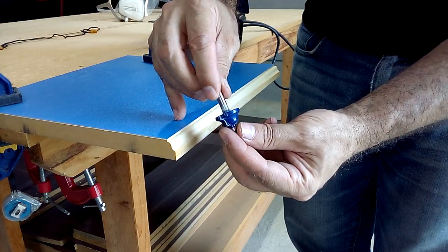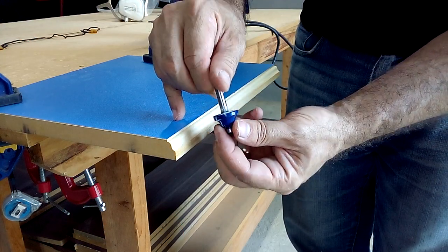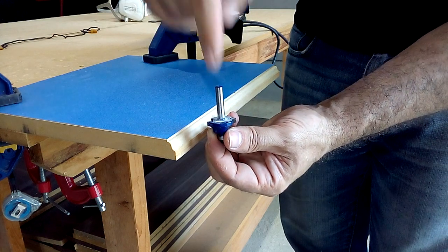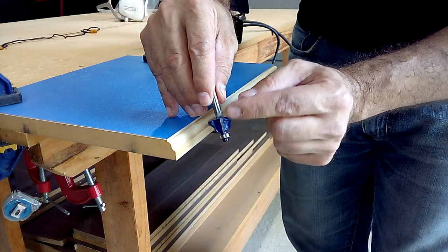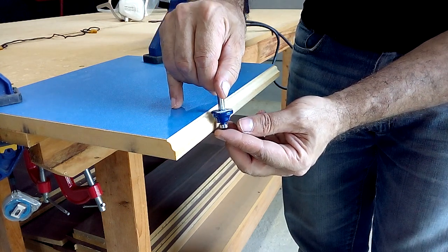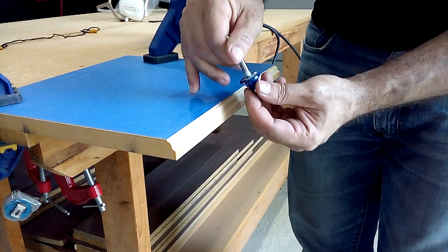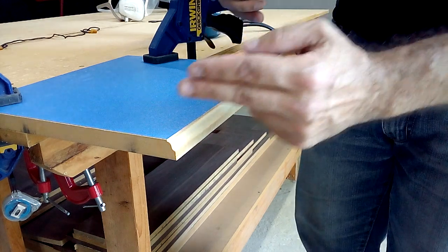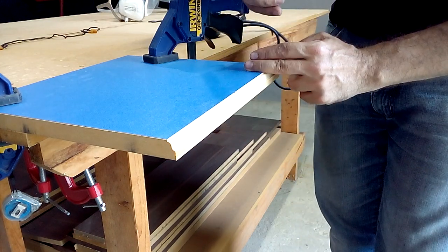To know how to move our router, we have to understand how the router bead spins. Viewed from above, the bead rotates clockwise to cut the board correctly. For this reason, the correct way to move the router when we hold it with our hands is to move it from left to right.